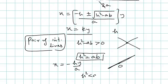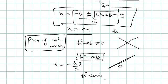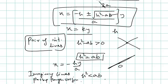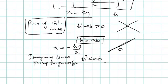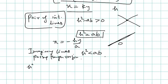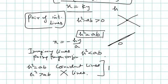Finally, if h² < ab, we have a negative number inside the square root, which is not a real number — so no real lines exist. In this case we have imaginary (non-real) lines passing through the origin. To summarize: h² = ab gives coincident lines; h² > ab gives intersecting lines (real lines); and h² < ab gives non-real lines.